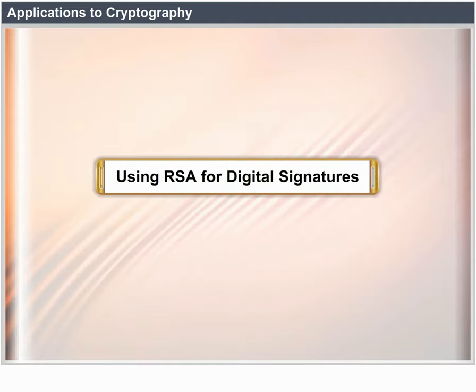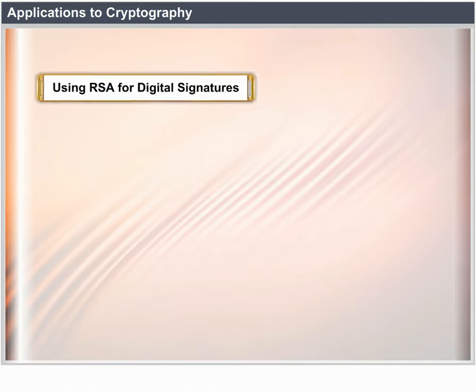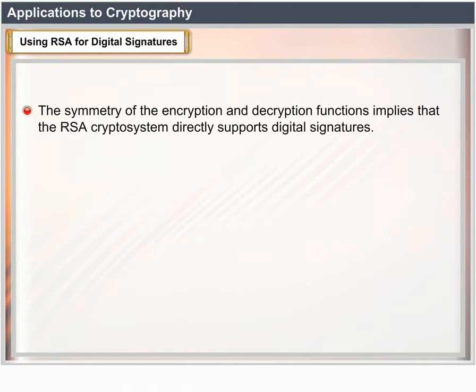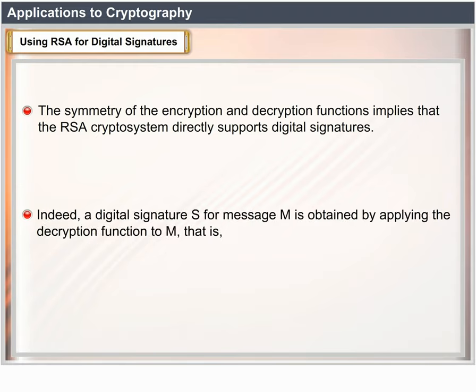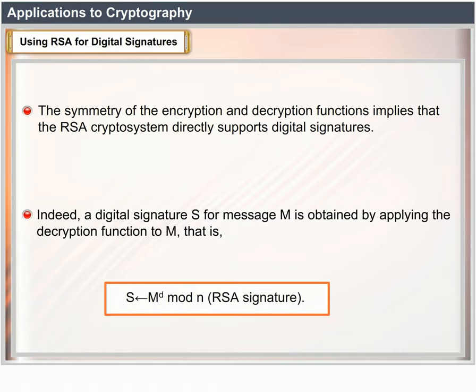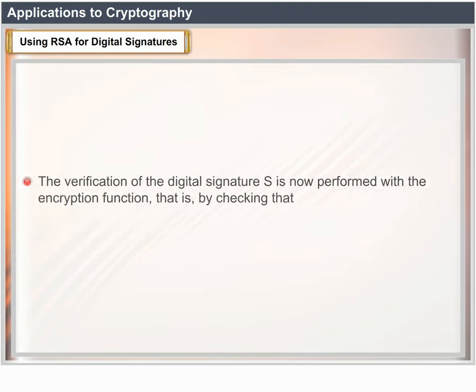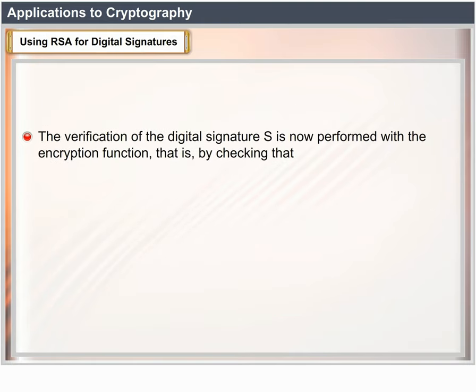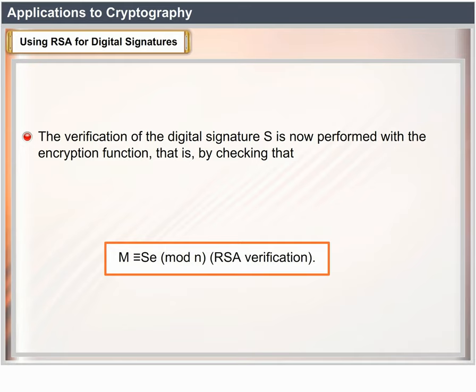Using RSA for digital signatures: the symmetry of the encryption and decryption functions implies that the RSA cryptosystem directly supports digital signatures. A digital signature S for message M is obtained by applying the decryption function to M: S = M^D mod N (RSA signature). The verification of the digital signature S is performed with the encryption function, by checking that M ≡ S^E mod N (RSA verification).